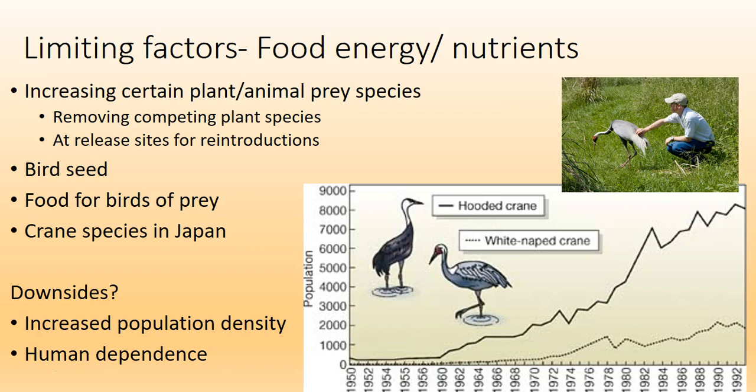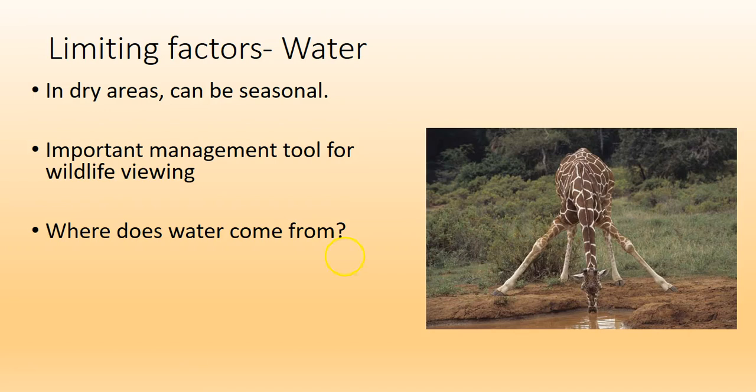One of the things that zoos will do if they're going to release a species back into the wild is keep it in as close to wild conditions as possible to make sure it can hunt on its own. Another limiting factor is water, and in dry areas this can be seasonal — in the rainy season you're fine, but in the dry season whoever gets water is going to survive.